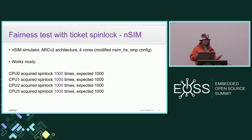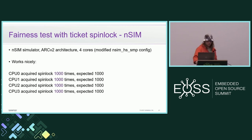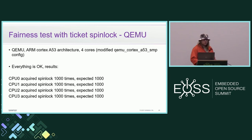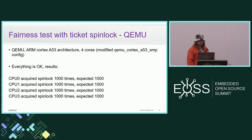Now we have the ticket spinlock implementation. Running our fairness test with it on nSIM shows it works nicely — everything is completely fair. Running it on the HDK hardware platform also shows completely fair results. Let's try it on QEMU as well, using a modified QEMU Cortex-A53 SMP config with four cores — the same number as in the other tests — and for now everything is okay and fair.